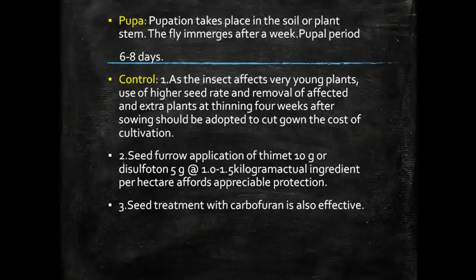For control measures, since the insect affects very young plants, use of a higher seed rate and removal of affected and extra plants at thinning four weeks after sowing is recommended. For seed furrow application, important pesticides like Phorate and Thimet 10G at the rate of 1 to 1.5 kg active ingredient per hectare offer appreciable protection.